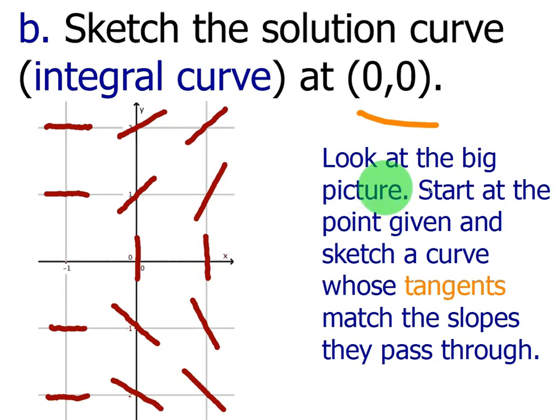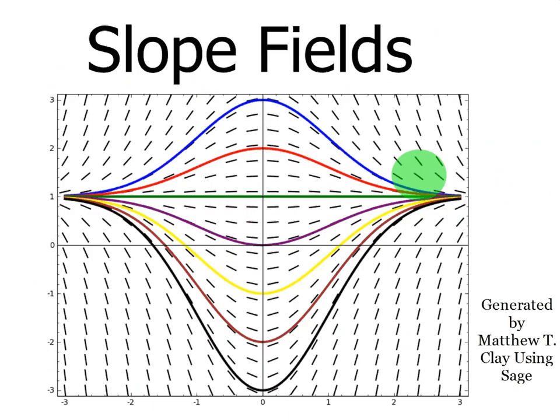And let's read this together. It says look at the big picture. Start at the point given and sketch a curve whose tangents match the slopes they pass through. So basically, you want to try to draw a curve that molds around this particular slope field at this point.